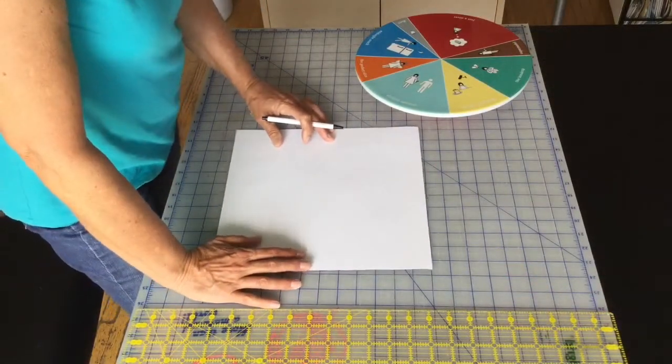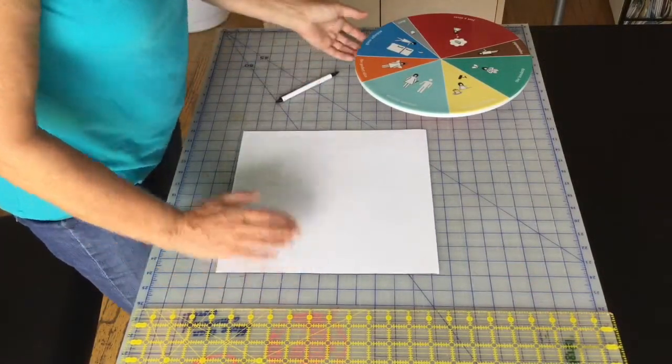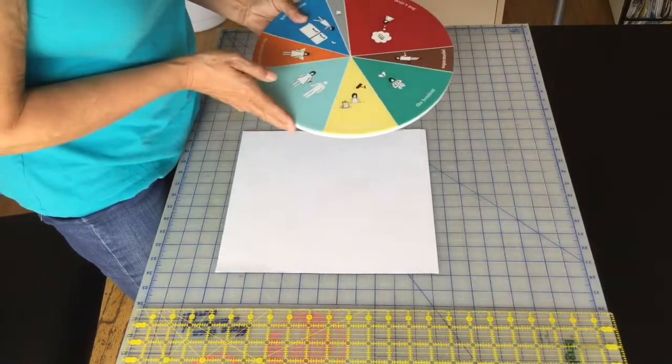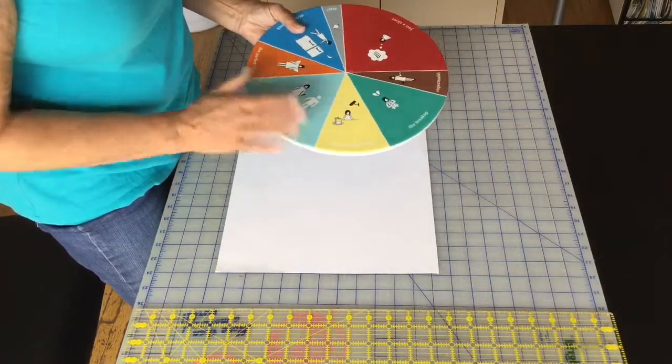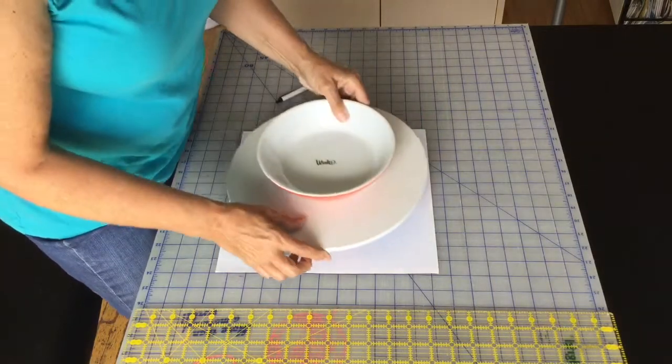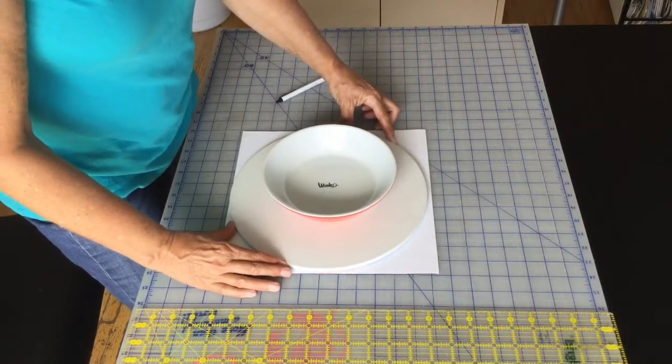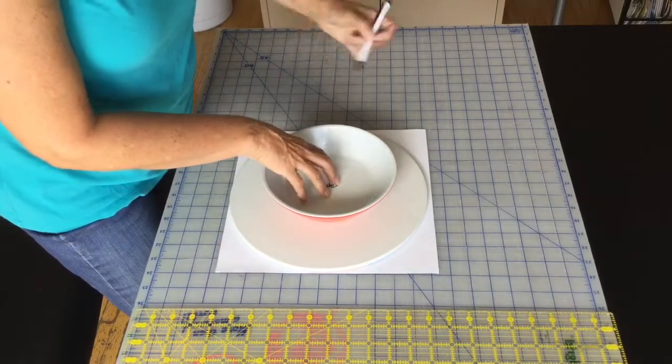So it doesn't matter what size circle you need to find the middle of. I just happen to need a circle that will fit this cake platter. So I'm using this to make my guide and all I'm going to do is just draw around.